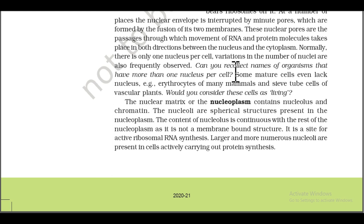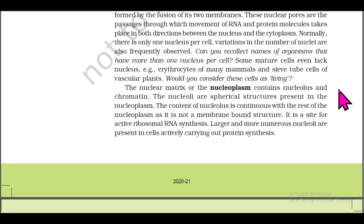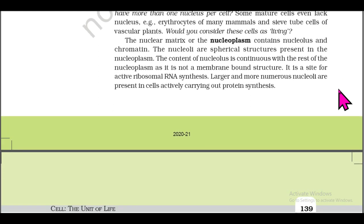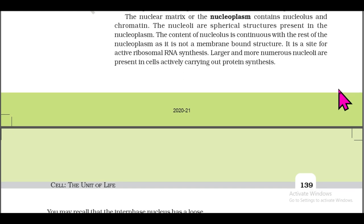Some mature cells even lack a nucleus, for example erythrocytes of many mammals and sieve tube cells of vascular plants. The nuclear matrix or nucleoplasm contains nucleolus and chromatin. The nucleoli are spherical structures present in the nucleoplasm; the content of the nucleolus is continuous with the rest of the nucleoplasm as it is not a membrane-bound structure.